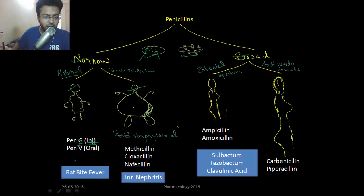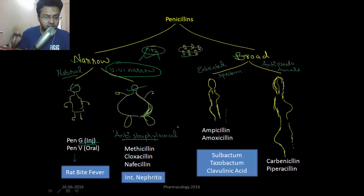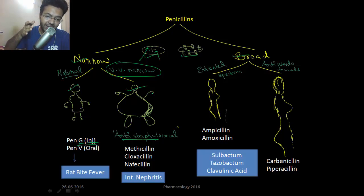Among narrow spectrum penicillins, the anti-staphylococcal penicillins are so structurally bulky they can only enter the cell wall of Staphylococcus aureus — that's why they are called anti-staphylococcal or very very narrow spectrum penicillins. These are also resistant to penicillinase or beta-lactamase.